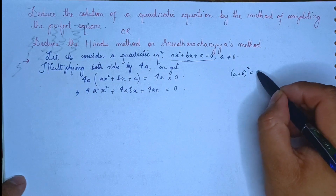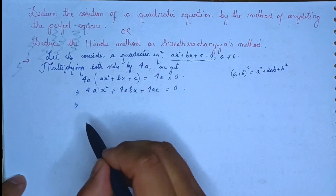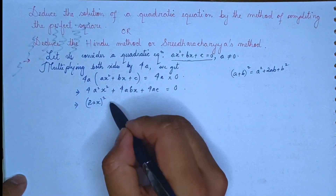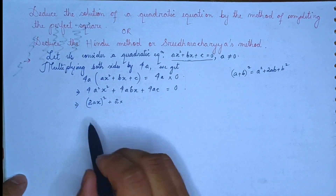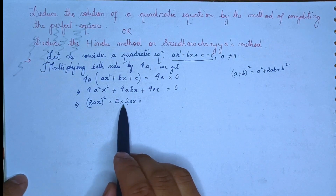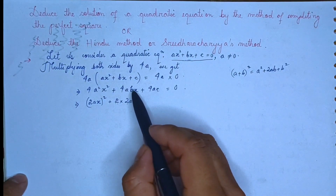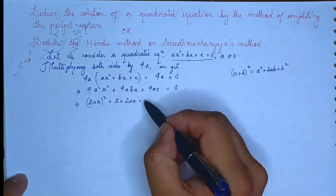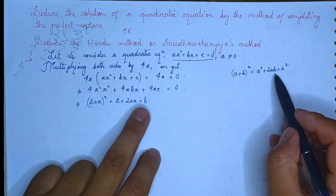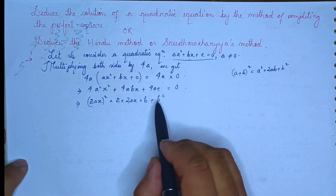Using the algebraic identity: a plus b whole squared equals a squared plus twice ab plus b squared. We recognize that 2ax plus b whole squared equals 4a squared x squared plus 4abx plus b squared.